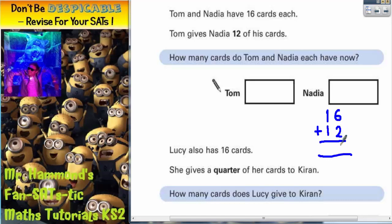So if we find the total of this using the colour method, 6 and 2 is 8, 1 and 1 is 2. So Nadia would now have 28 cards.